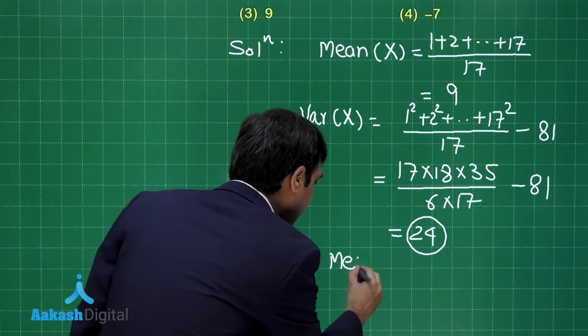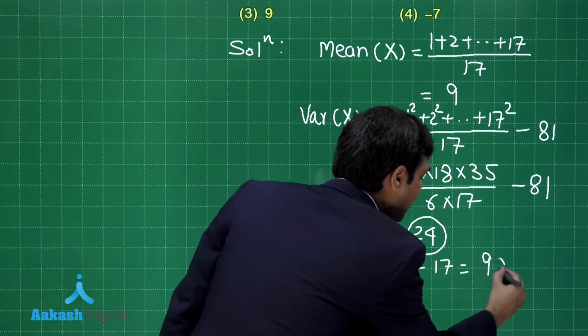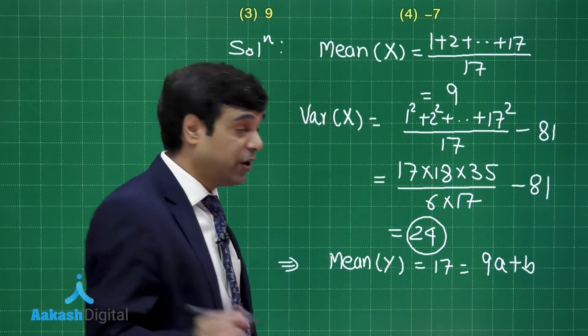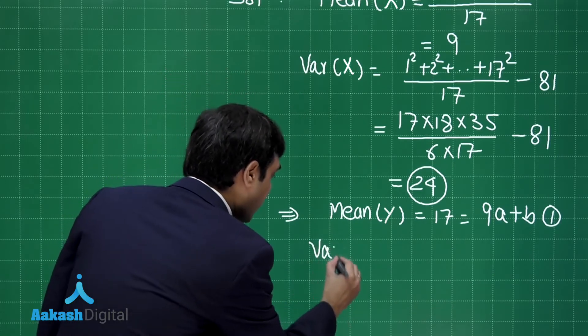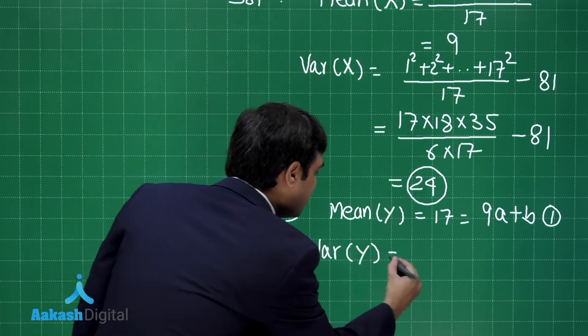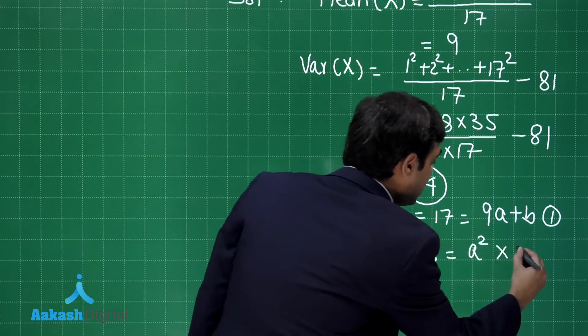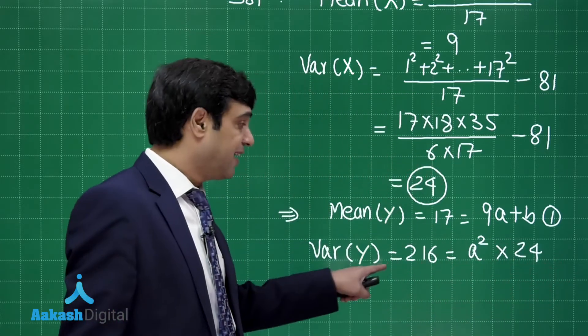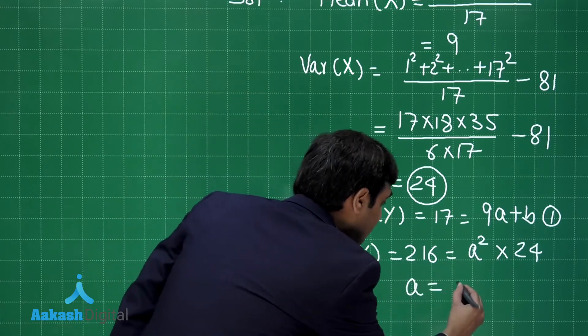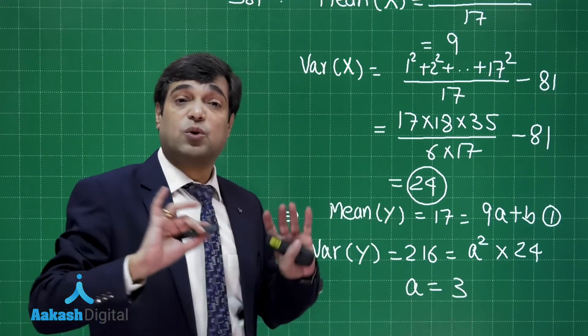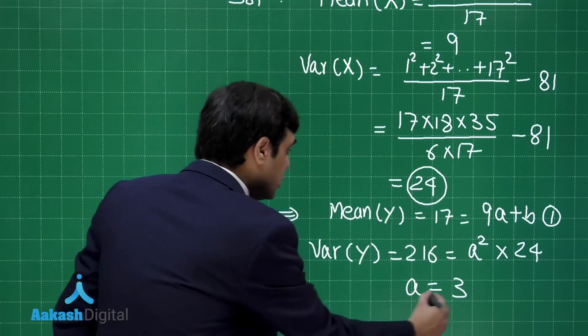This implies that mean of Y, which is given to me as 17, will be 9a + b. Let's say this is equation 1. Now the variance of Y, which is given as 216, will be equal to a² × 24. So from here we get a² = 216/24, so a = ±3. But it is given a is positive, so the only possible value is 3.